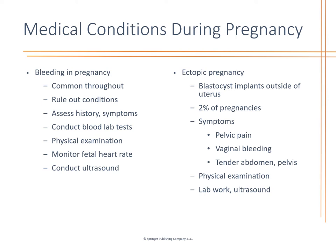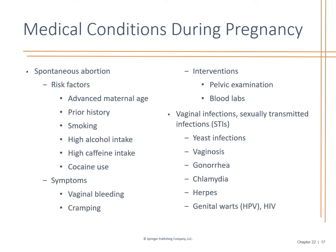For ectopic pregnancies, they present with pelvic pain and vaginal bleeding — this is why it's important to do pregnancy tests on women coming in with abdominal pain. Check a pregnancy test; see if it's possible. This is a referral out to GYN. Spontaneous abortions unfortunately can happen — very common with high alcohol and caffeine intake, drug use, smoking, and advanced maternal age. Symptoms include vaginal bleeding and cramping. Talk to OB/GYN; if they can't be seen right away, send them to the ER or set up an outpatient ultrasound, documenting everything done out of concern for a possible spontaneous abortion.